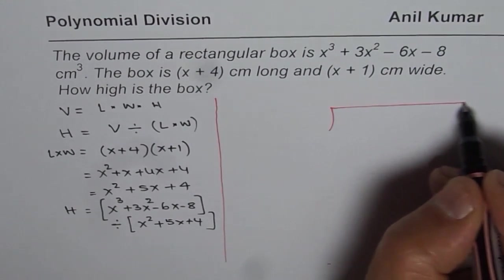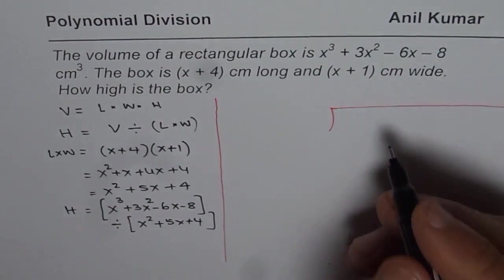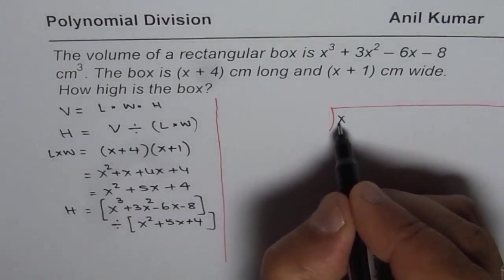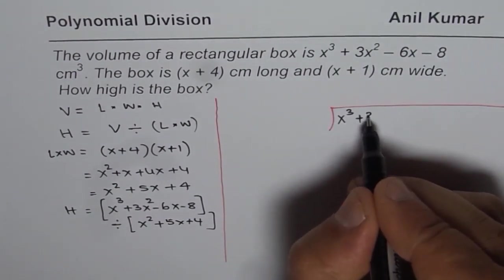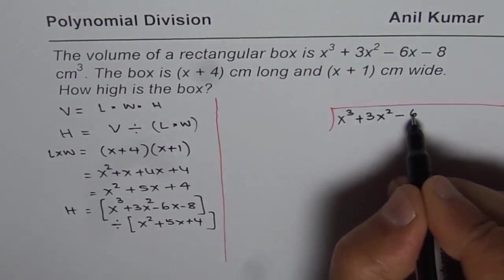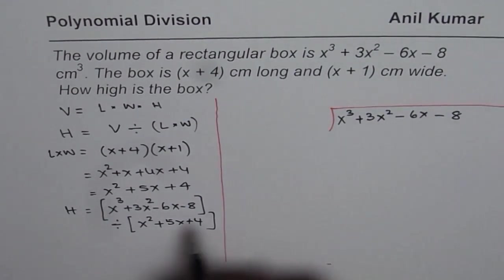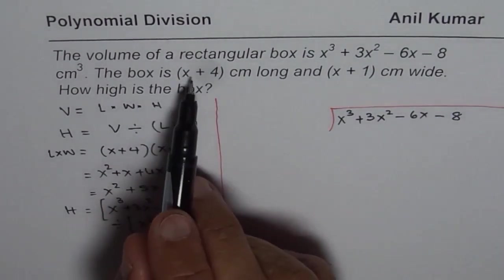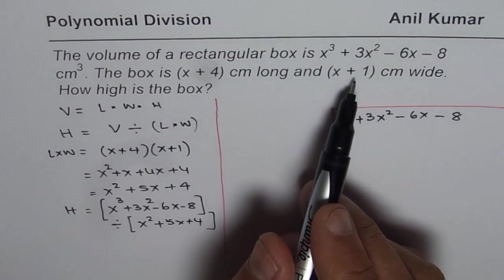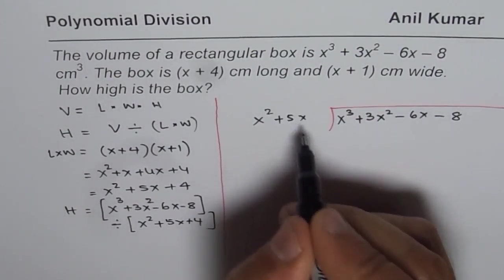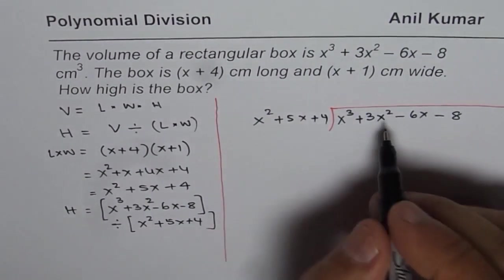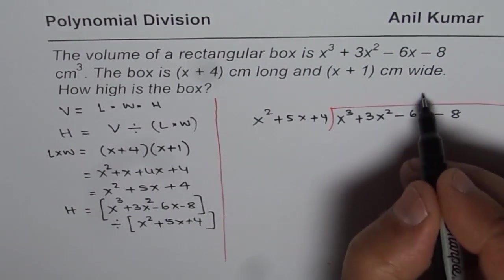We will divide on the right side. We are dividing x³... all the terms are there, so we will just write them as such: 3x² - 6x - 8 by product of (x+4) and (x+1) which is x² + 5x + 4. You have to take care of the first three terms.